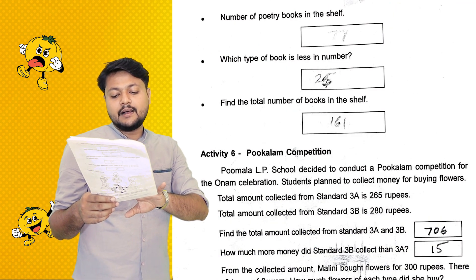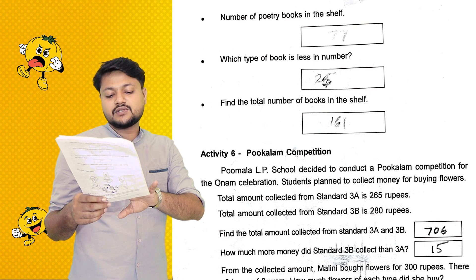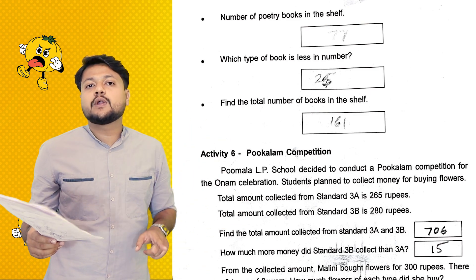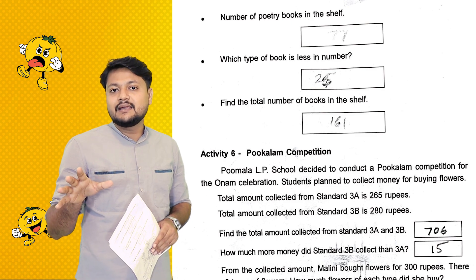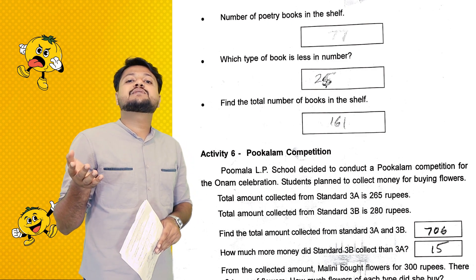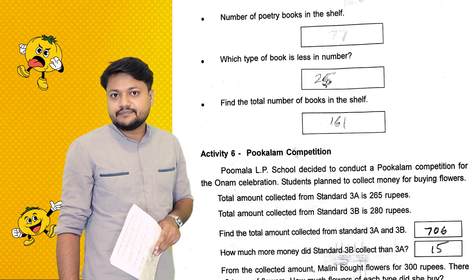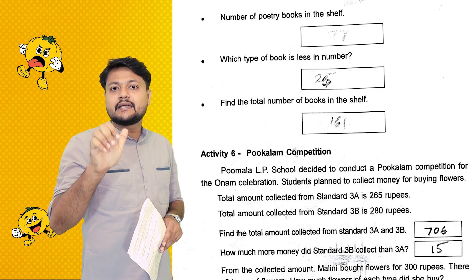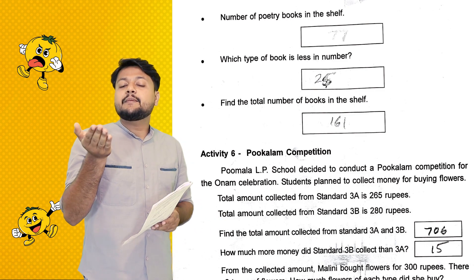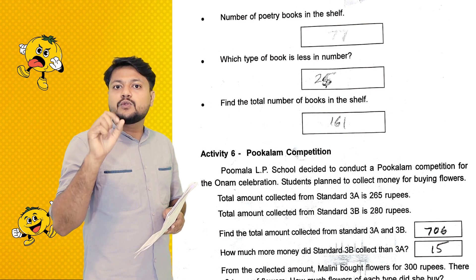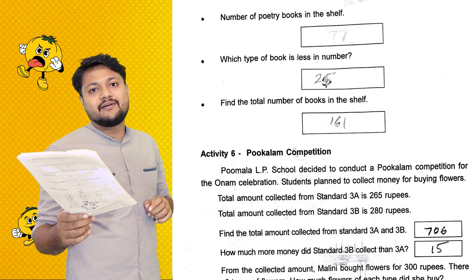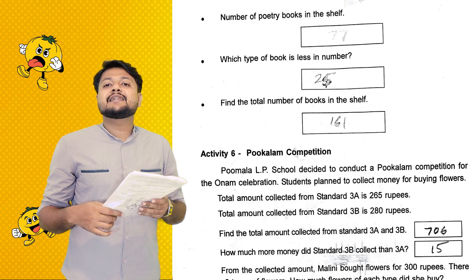For the story books in the first row: 486 minus 427 equals 59, plus 1 equals 60. So there are 60 story books. Now we need to find the number of poetry books. Which type of books has a lesser number? We need to find the total number of books in the shelves.